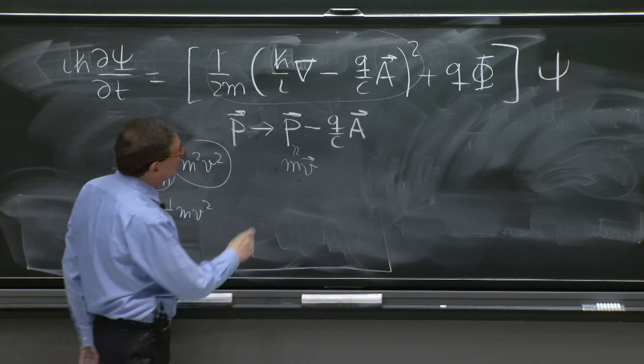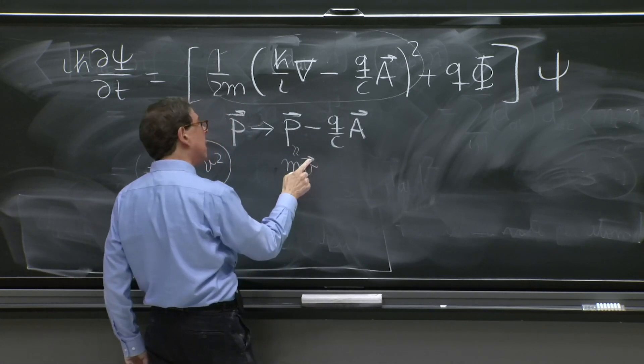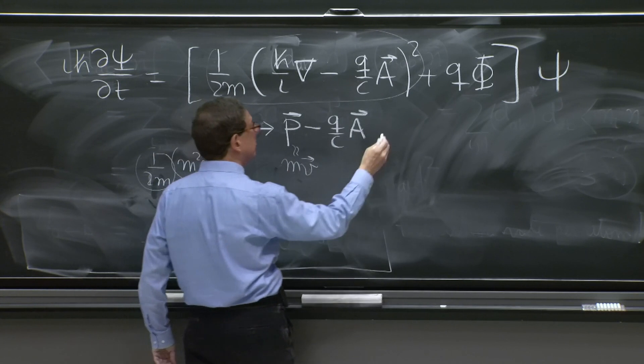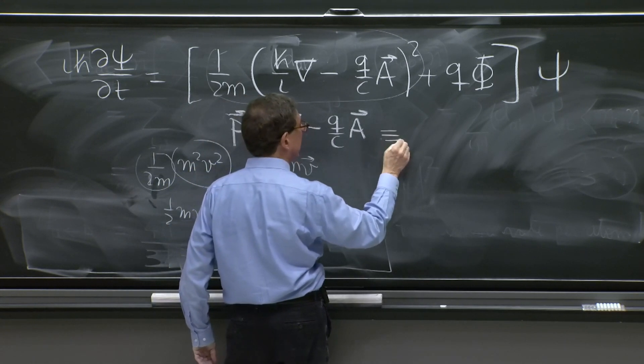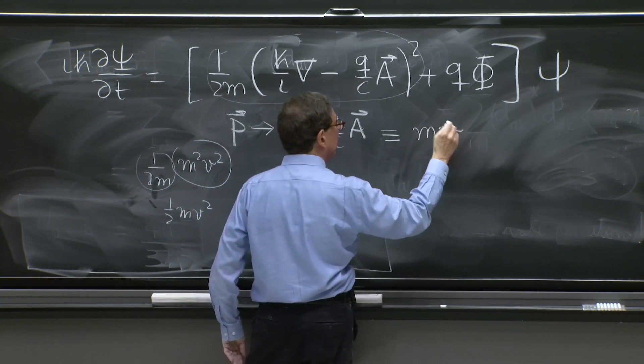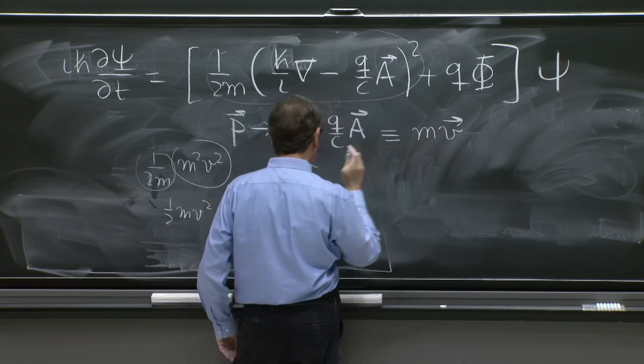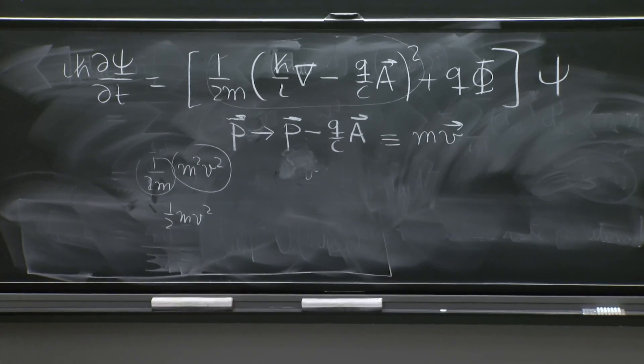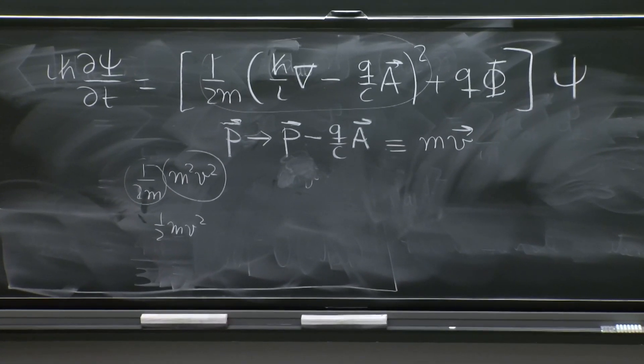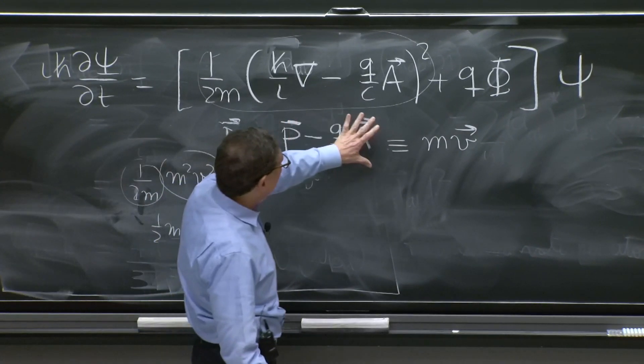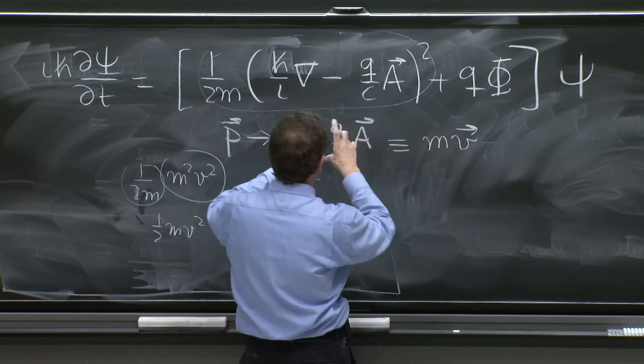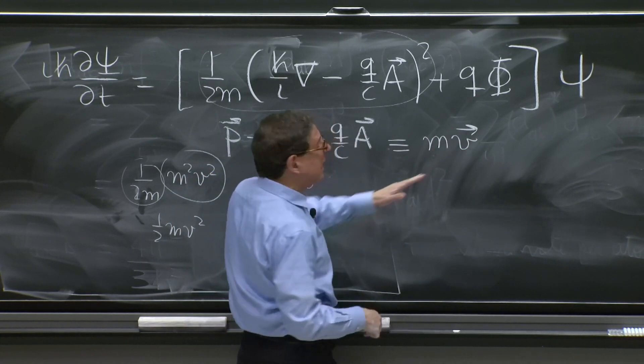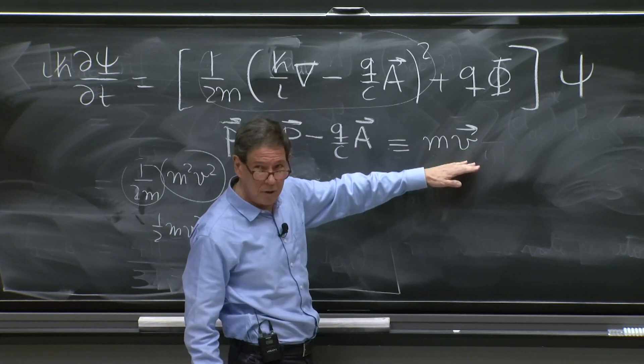So what we will see is that if you want to speak about the velocity operator, this whole thing is the velocity operator. We don't really speak of velocity operators in quantum mechanics before we put electromagnetic fields, but here it will be natural to call this m times the velocity operator in the sense of Heisenberg equations of motion.